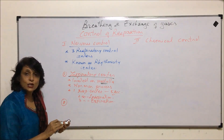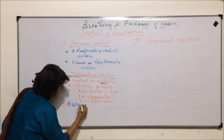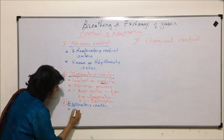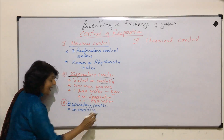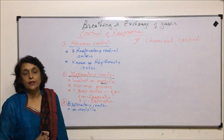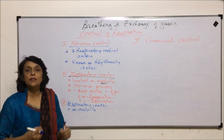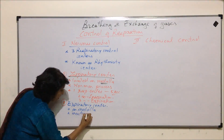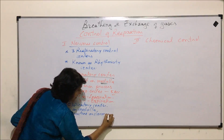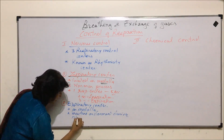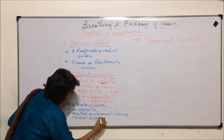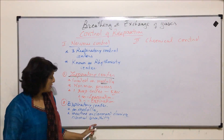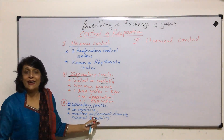This is under the control of the inspiratory center, which is located on the medulla oblongata. The second center is known as the expiratory center. It is also located on the medulla. It normally remains inactive or dormant — that means during normal breathing it is inactive.